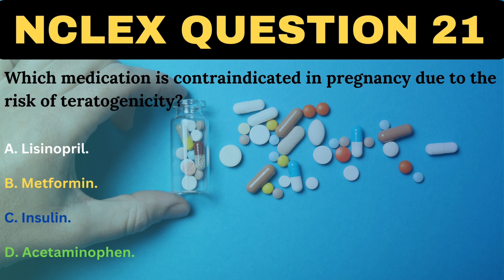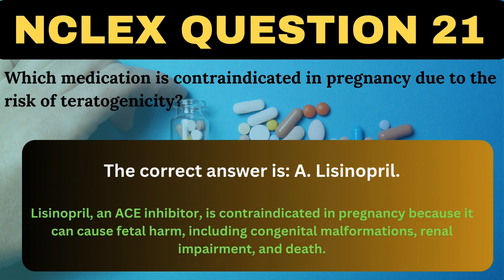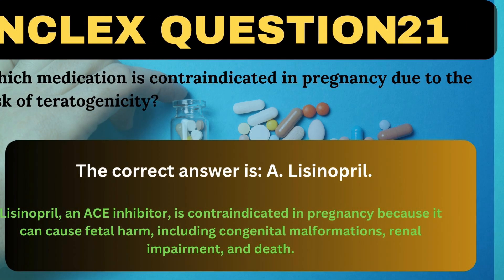Which medication is contraindicated in pregnancy due to the risk of teratogenicity? A. Lisinopril. B. Metformin. C. Insulin. D. Acetaminophen. The correct answer is A, Lisinopril. Lisinopril, an ACE inhibitor, is contraindicated in pregnancy because it can cause fetal harm, including congenital malformations, renal impairment, and death.